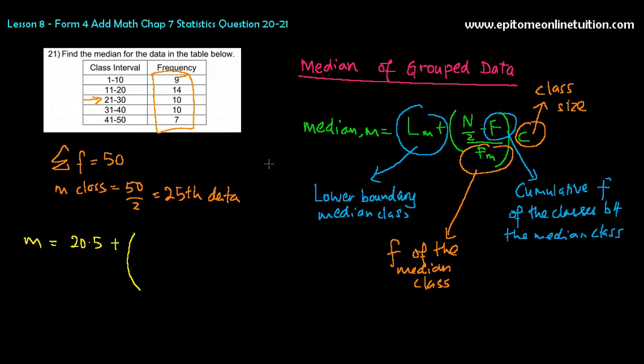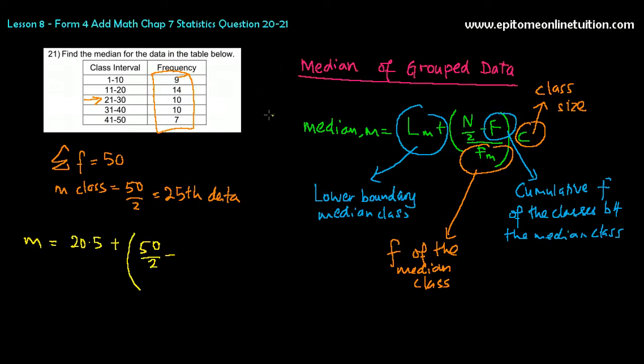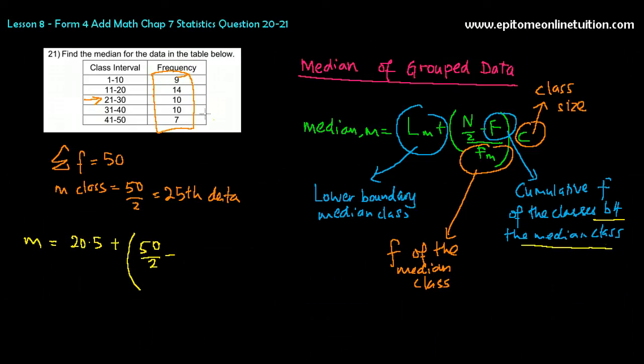Total N stands for total frequency, which is 50, and it's divided by 2 because it's the median. Minus, big F stands for cumulative frequency of classes before the median class. So, that means this is your median class, so you add up all the frequency before the median class. That means you add 9 and 14. That is big F.